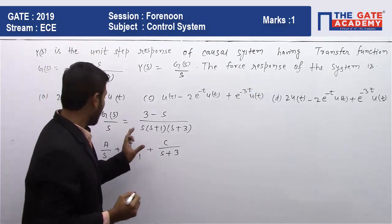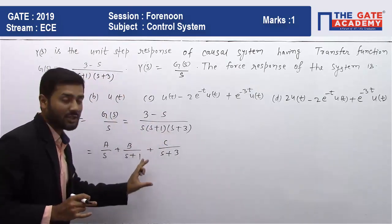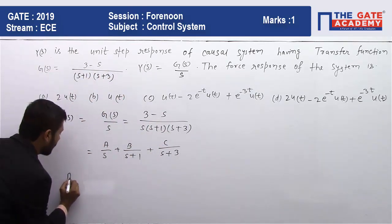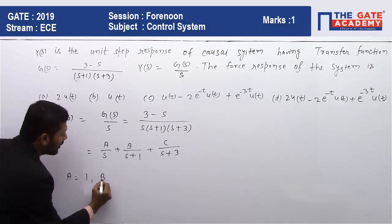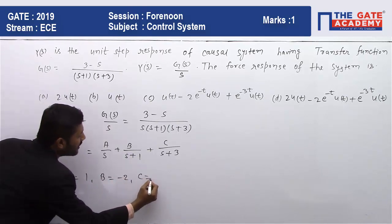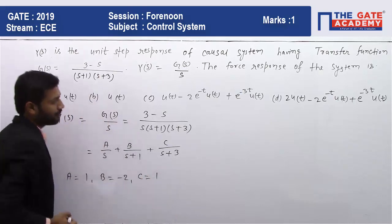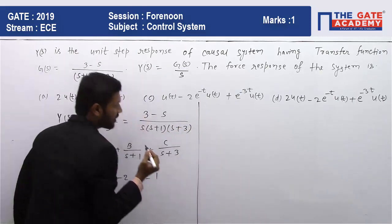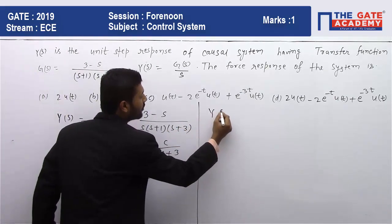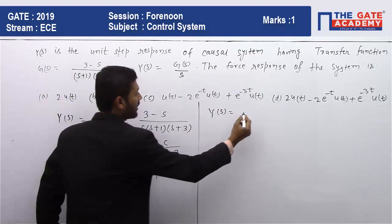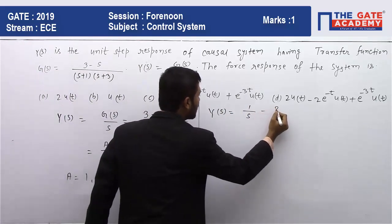If we solve this one, we will get A = 1, B = -2, and C = 1. So our response Y(s) is Y(s) = 1/s - 2/(s+1) + 1/(s+3).